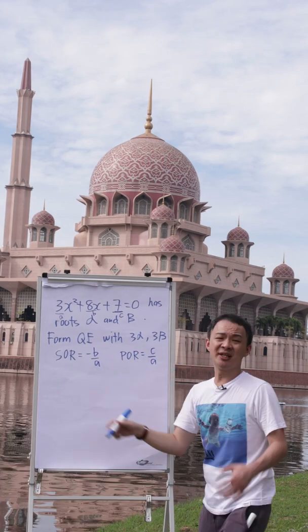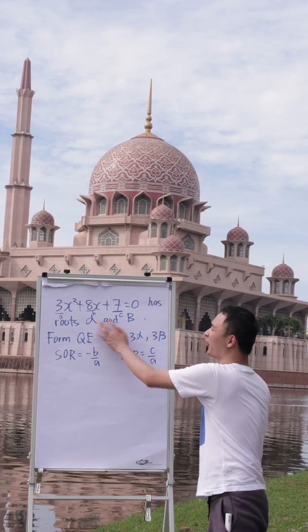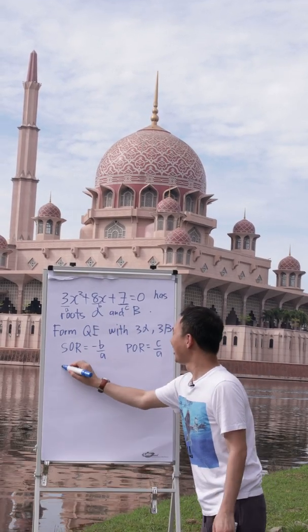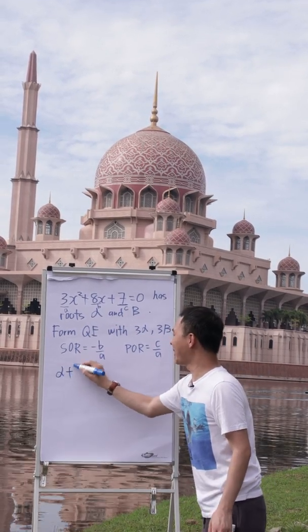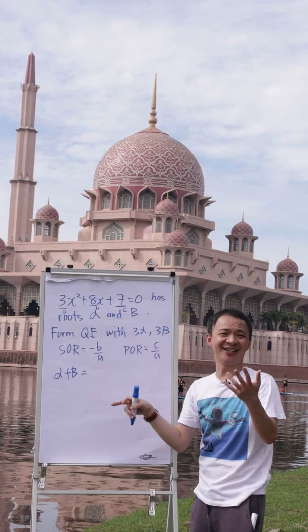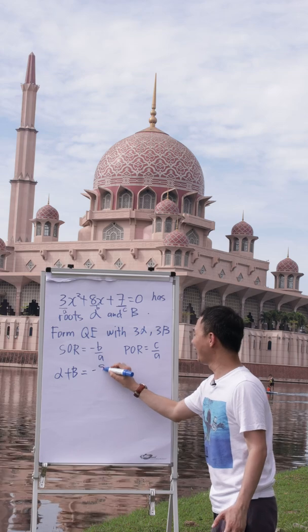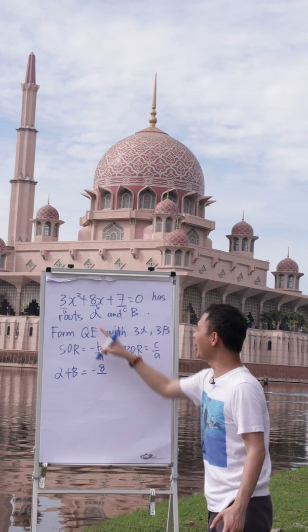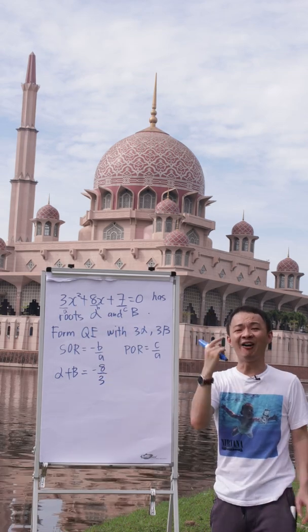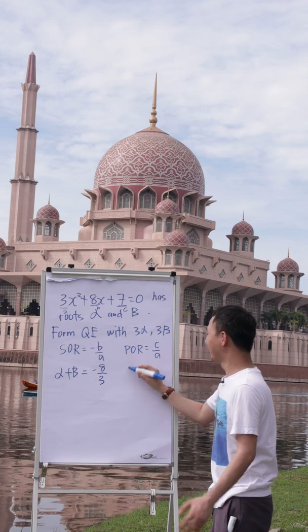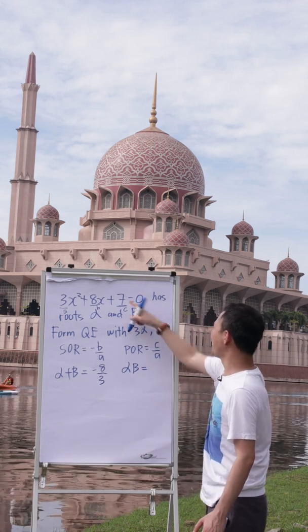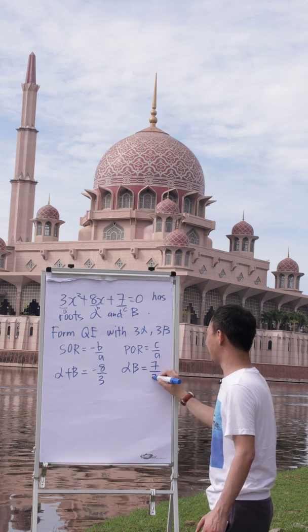What is the meaning of sum of root? You have both of these as your root. Sum basically means you add them, so alpha plus beta equals negative b over a. Your b is 8, so you get negative 8 over 3. Product of root means alpha multiplied by beta, which will be c — which is 7 — over a — which is 3.